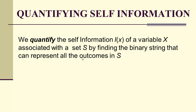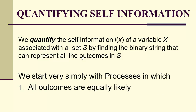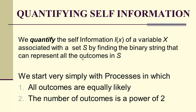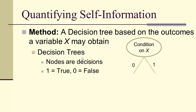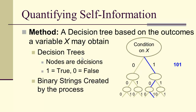To quantify self-information, we find the binary string that can represent all the outcomes in S. We'll start with simple processes where all outcomes are equally likely and the number of outcomes is a power of 2. The method we'll use for encoding is a decision tree, where each node is a condition on your variable with two edges — one for true and one for false. Following the tree gives a binary representation of the outcome, so for example a path through the tree might give the string '101'.